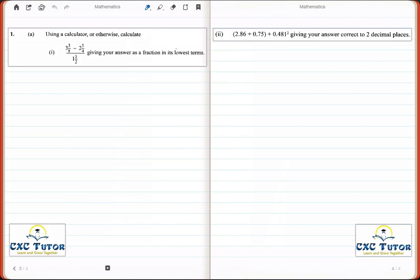In question 1a, part 1, you are asked to use a calculator or otherwise to calculate the following expression, and you are supposed to give your answer as a fraction in the lowest terms. Like with most of these early questions, you are just required to know some basic algebra, such as how to convert from mixed fractions to improper fractions, and how to add, subtract and divide fractions and decimal numbers.